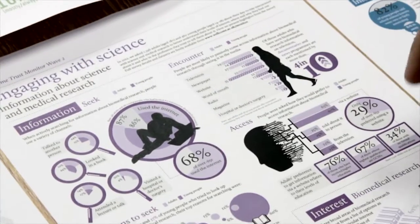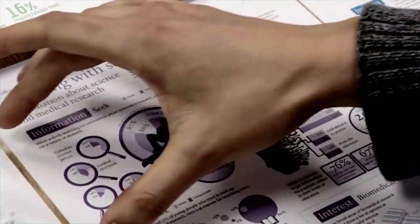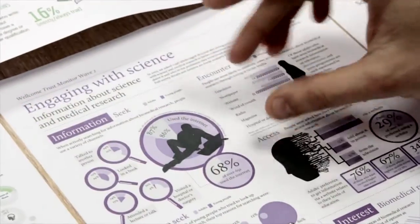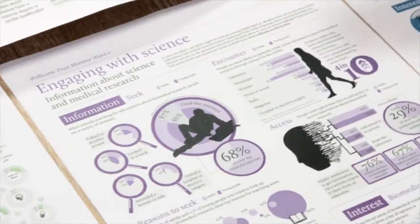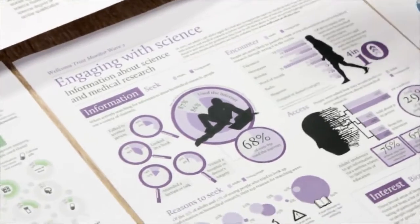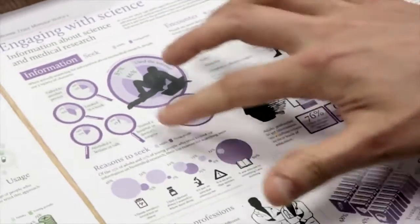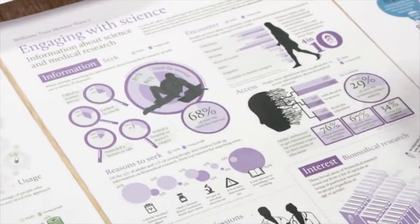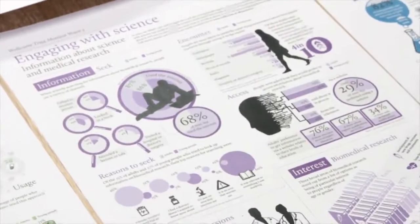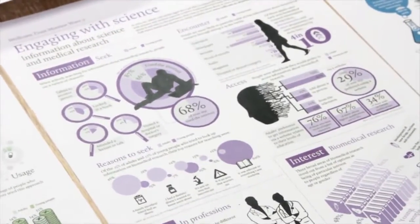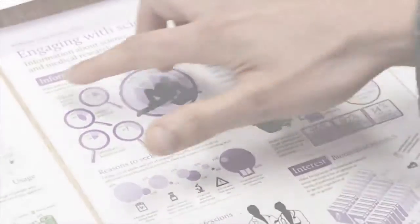What we were talking about before was the visual hierarchy. This piece of information here was deemed to be the most important — the kind of primary fact. The key statistic is highlighted here, which also draws the eye to the left-hand side of the page, and then the details are all there supporting it.